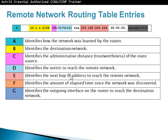The next section identifies the next hop IP address — the neighbor's IP address — to reach the remote network. The section under F (e.g., 00:00:05) identifies the elapsed time since the network was discovered. The last field — for example serial 0/0/0 — identifies the outgoing interface on the router used to reach the destination network.